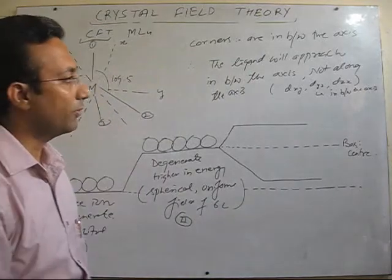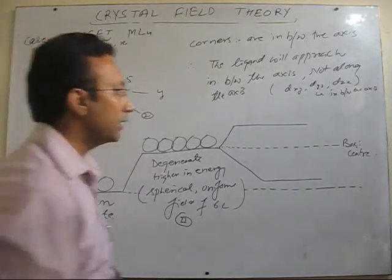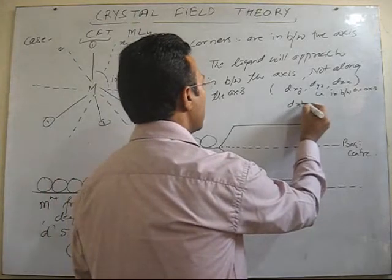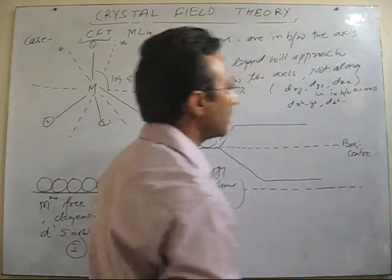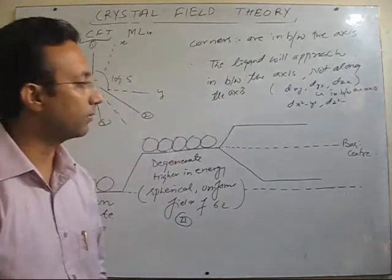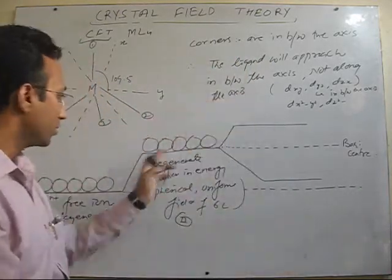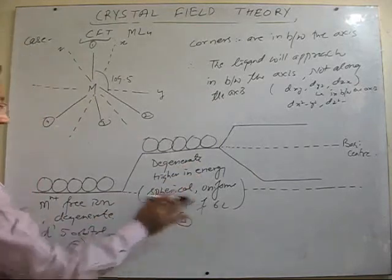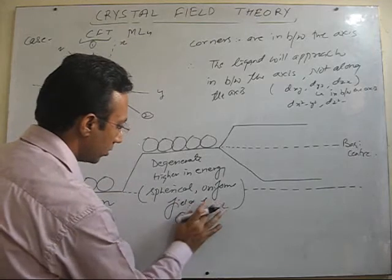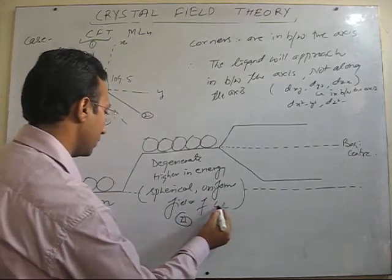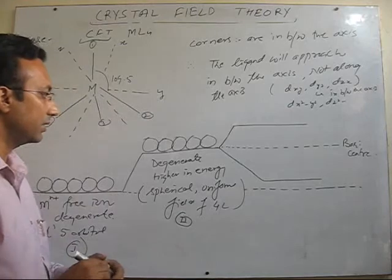Therefore, these orbitals are going to suffer more repulsion as compared to the other set of orbitals, that is dx²-y² and dz², where electron density is along the axes. So here the situation is a little bit reverse. The previous two cases — free metal and here — out of four ligands approaching in this case, there are less ligands in tetrahedral.